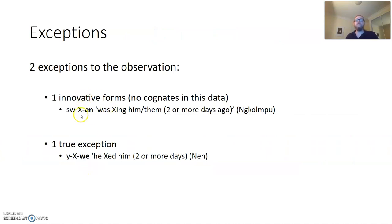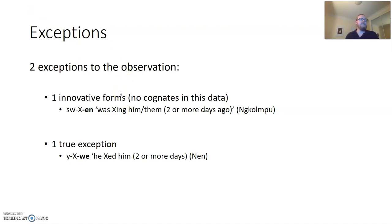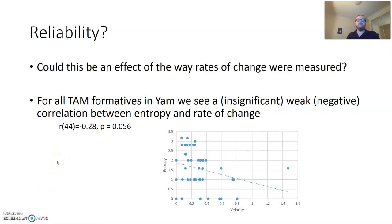There are two exceptions. One I don't really think is a true exception — it involves an EN suffix with no cognates in the data set, suggesting it's a recent innovation. According to our measure it has a zero rate of change, since it hasn't changed since it was created. But given that it's so recent, it probably isn't as stable as the measure suggests. Beyond that, there is one true exception I can't explain with the data. But overall this is a remarkably strong amount of confirmation for our prediction.